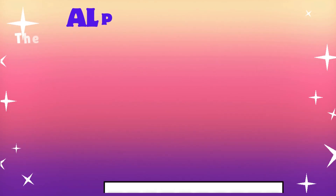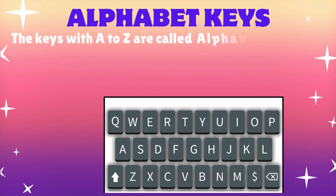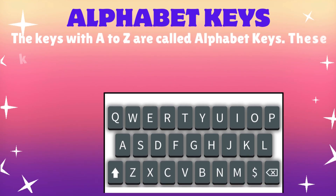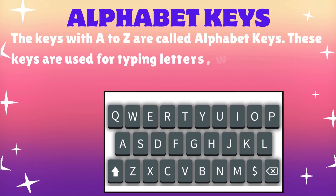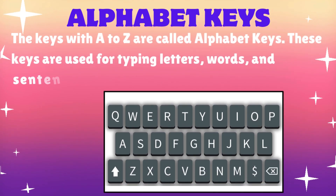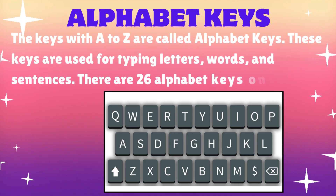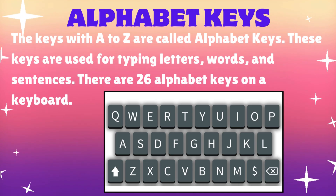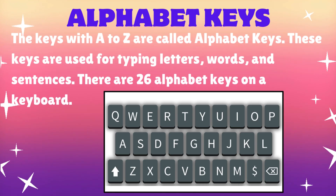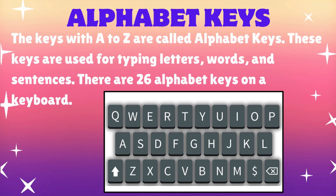The keys with A to Z are called alphabet keys. These keys are used for typing letters, words, and sentences. There are 26 alphabet keys on a keyboard.